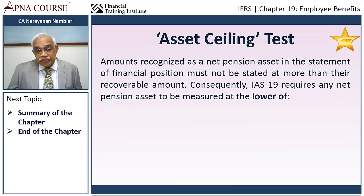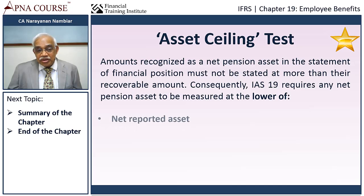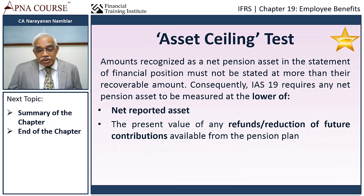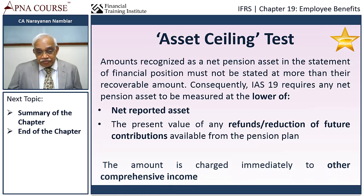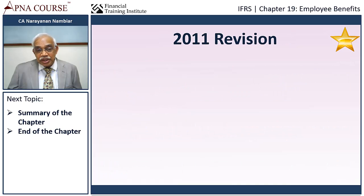Asset Ceiling Test: Amounts recognized as a net pension asset in the statement of financial position must not be stated at more than their recoverable amount. IAS 19 requires any net pension asset to be measured at the lower of the net reported asset or the present value of any refunds, reductions, or future contributions available from the pension plan. Any amount exceeding this during the asset ceiling test will be charged immediately to other comprehensive income.